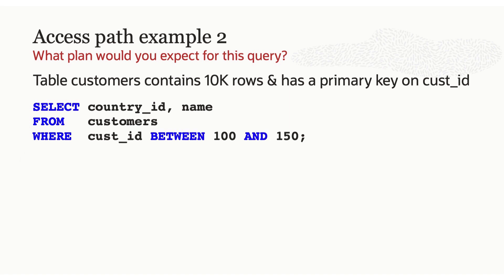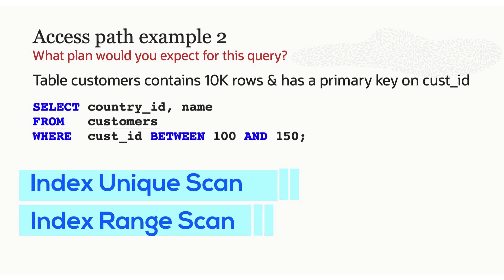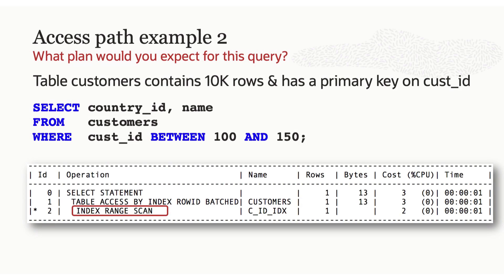What about this second example? Same customers table, same 10,000 rows, same primary key index — but this time the predicate is customer_id BETWEEN 100 AND 150. Index range scan or index unique scan? In this case it's an index range scan. The optimizer doesn't know how many legitimate values exist between 100 and 150, so it doesn't take the risk of rewriting the statement with all 50 possible values. It simply performs an index range scan.